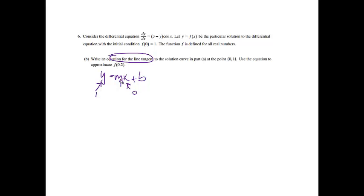and the slope is the derivative at 0, 1. So we know dy/dx is equal to 3 minus y cosine x. We also know what our x and our y are. This is going to help me find the slope, because the derivative is the slope. So we're going to have 3 minus y, which is 1, times cosine of 0. So this will be 2 times the cosine of 0 is 1. 2 times 1 is 2, so m is 2.